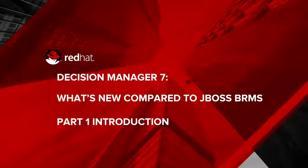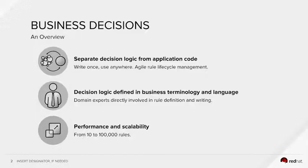In short, Red Hat Decision Manager is a fast, lightweight, cloud-native business rules and decision management platform. You are probably all aware that it's good to separate decision logic from application code. It is good to allow domain experts and business analysts to define decision logic in business terminology and language which is directly executable. And it is good to have high performance and scalability up to tens of thousands of business rules. Decision Manager provides you with all these capabilities.